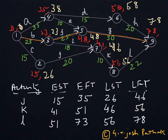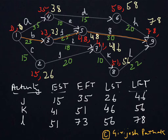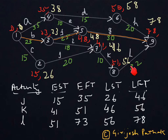Now you find on this network diagram that for various nodes like node number 1, node number 3, node number 5, and node number 9, the earliest time and latest time are the same. For example, on node 3, the earliest time is 23 and the latest time is also 23. But for other nodes like node 8, the earliest time is 51 while the latest time is 56.